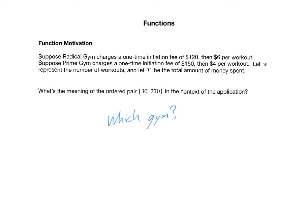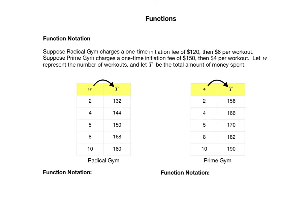We could figure it out from the input-output rule, but instead let's create a notation that keeps track of which gym we're talking about. Looking at our two input-output tables — one for Radical Gym and one for Prime Gym — we want notation that distinguishes them. For example, (8, 168) means eight workouts at Radical costs $168, but (8, 182) means eight workouts at Prime costs $182. So let's call the relationship between W and T for Radical Gym F, and for Prime Gym G. We could have named them anything, but you'll see soon why we used F and G.